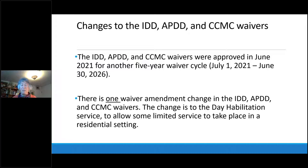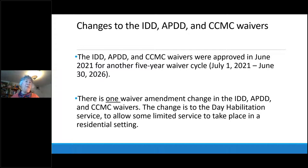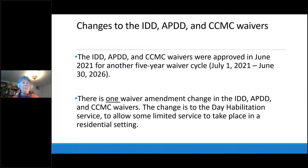The CMS technical guide expressly disallows dayhab to be provided in residential settings because otherwise it would be considered residential habilitation. But COVID flexibilities taught us that a certain amount of day habilitation in a recipient's home is appropriate and should not be disallowed — recipients should be able to take an occasional class in their own home with their DSP, or take their DSP to a birthday party of a friend who lives in a group home. We've had requests to change this for years. We finally took it to CMS and had conversations with top leadership for home and community-based waiver services at CMS, and they agreed with us.